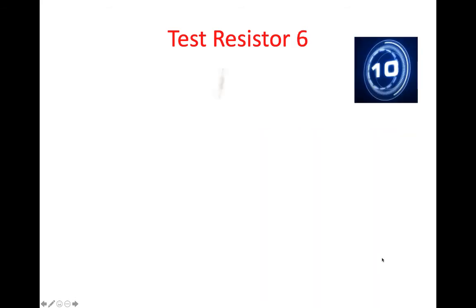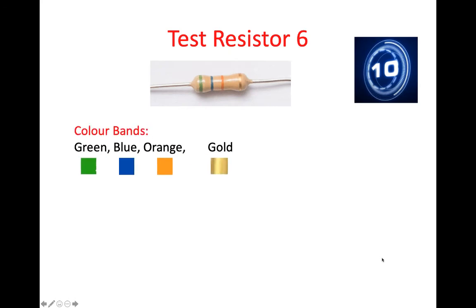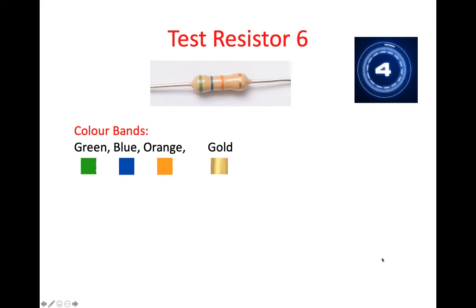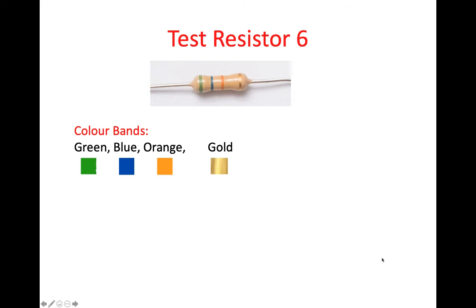Test resistor number six. Here we have green, blue, orange, and gold. Green has the value 5, so that's the first digit of the resistance value. Blue has the value 6, and that's the second digit of the resistance value. And orange, the multiplying value, is 3.